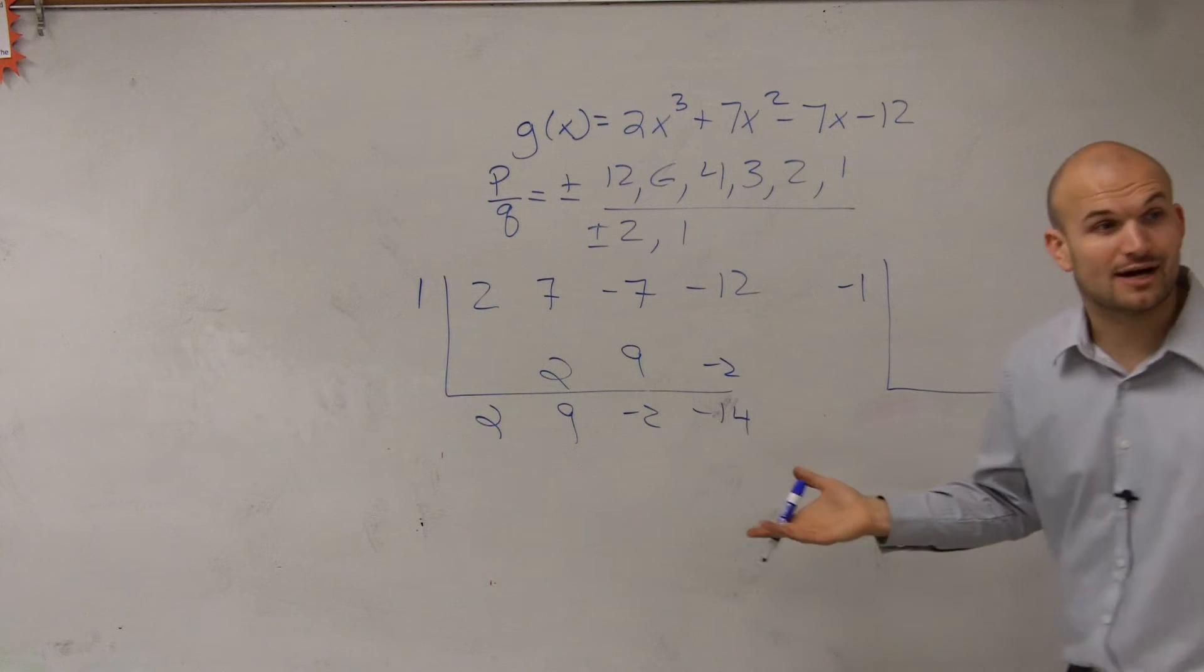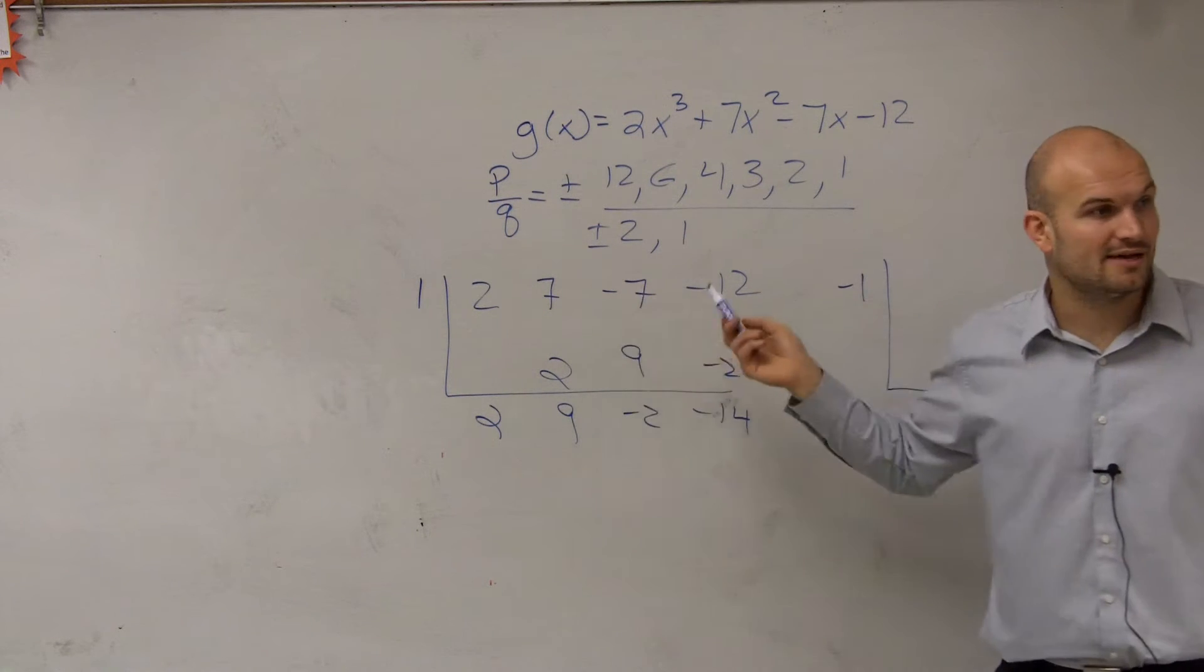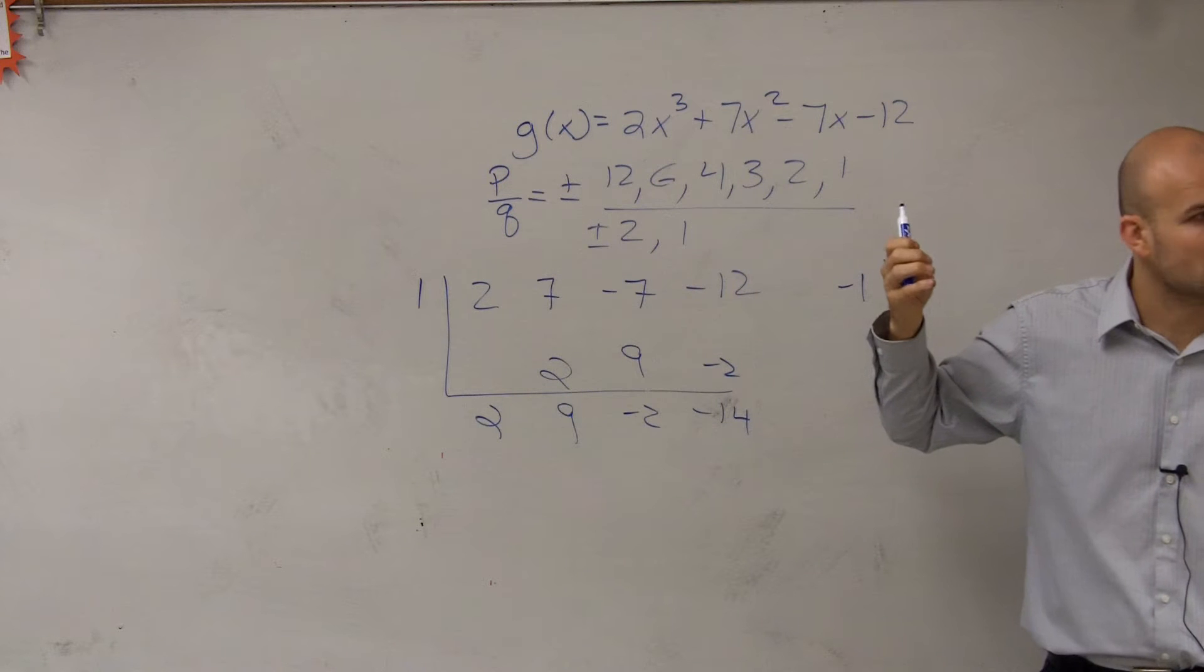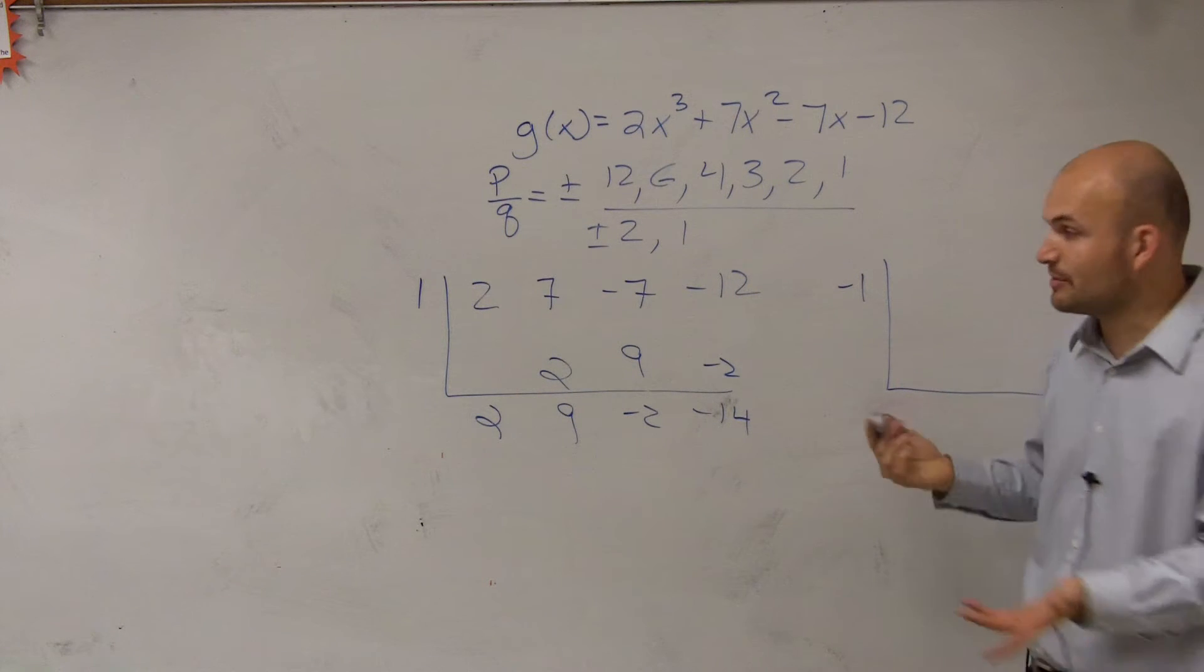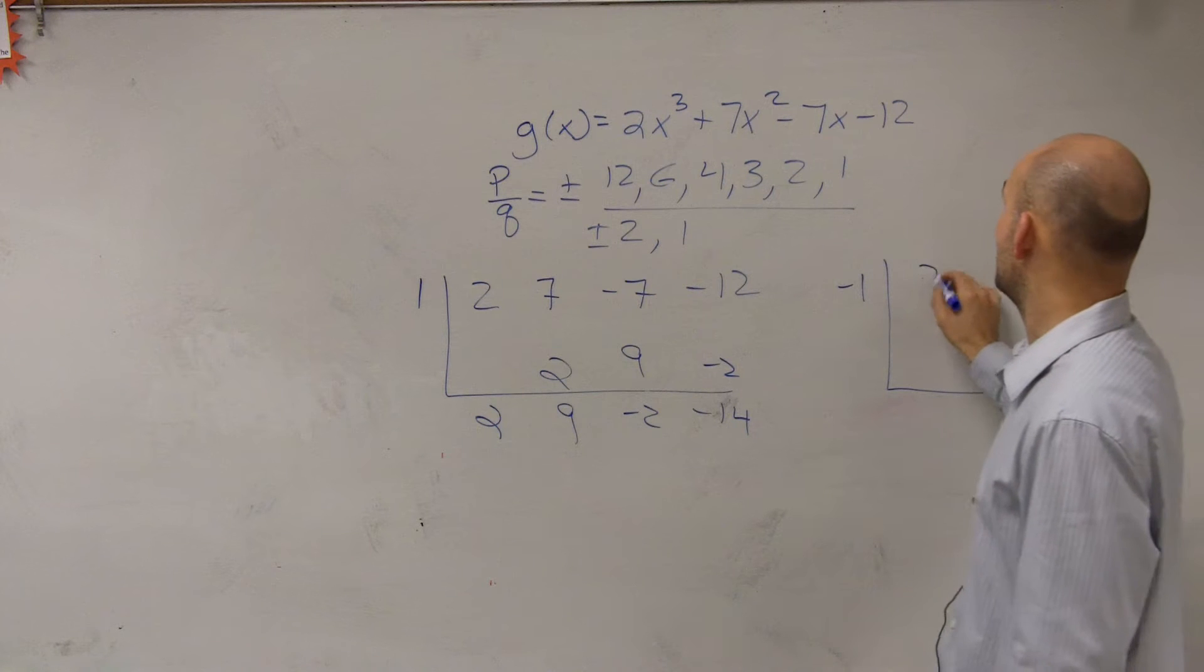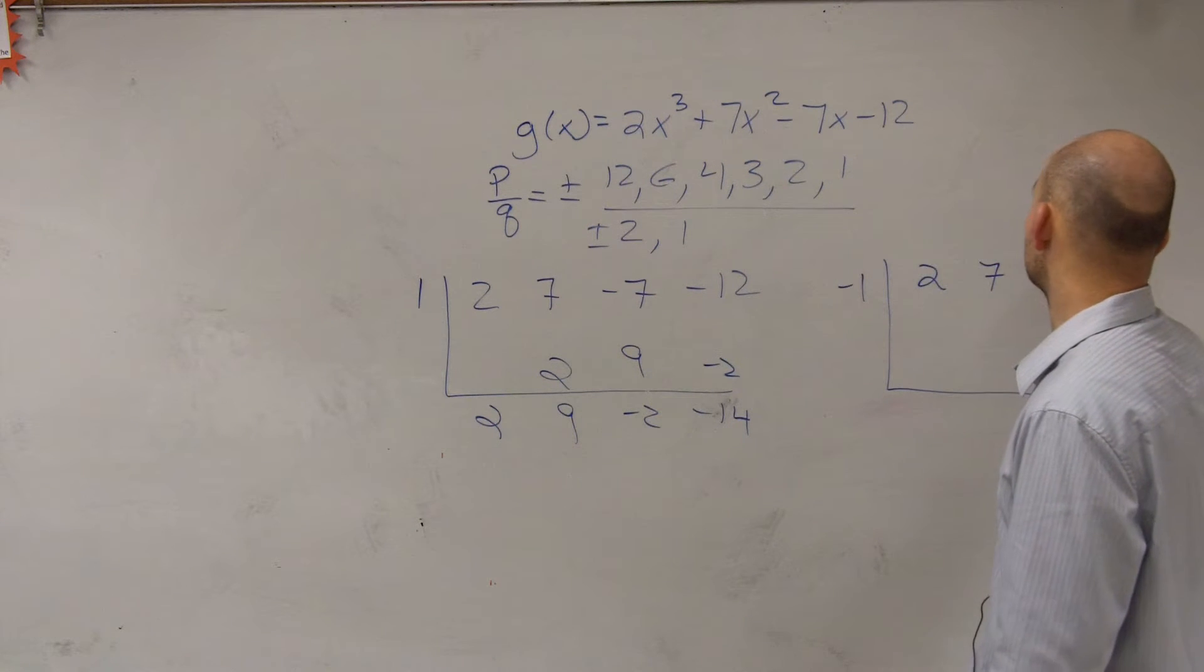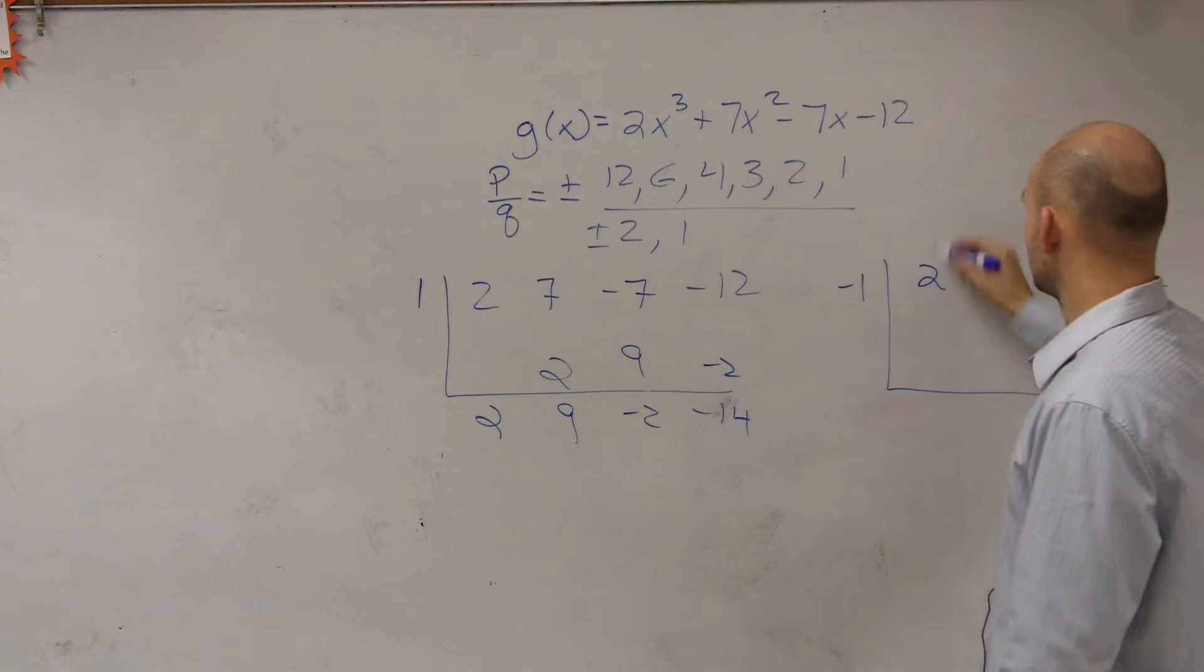Alright, if you have a graphing calculator, you could already determine if 1 or negative 1 was a zero. If they were, then you just needed to prove it. But if not, you wouldn't even have to do this. But I don't have a graph calculator with me, so I'm just going to do synthetic division to work them out. So I bring down the 2.